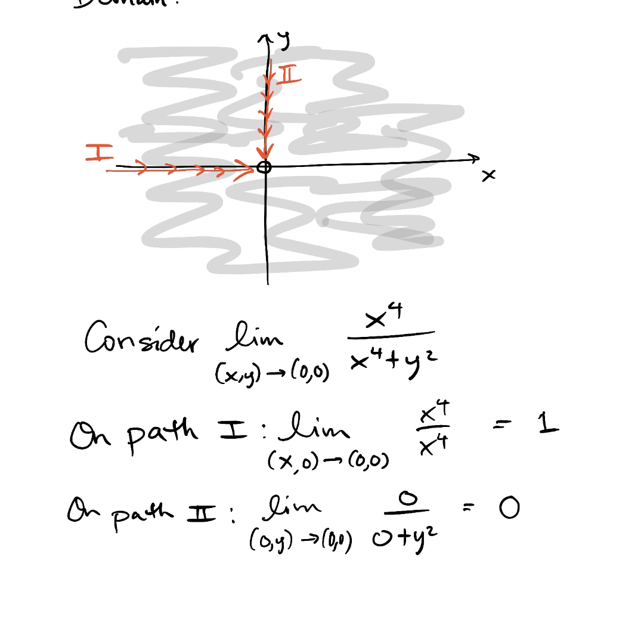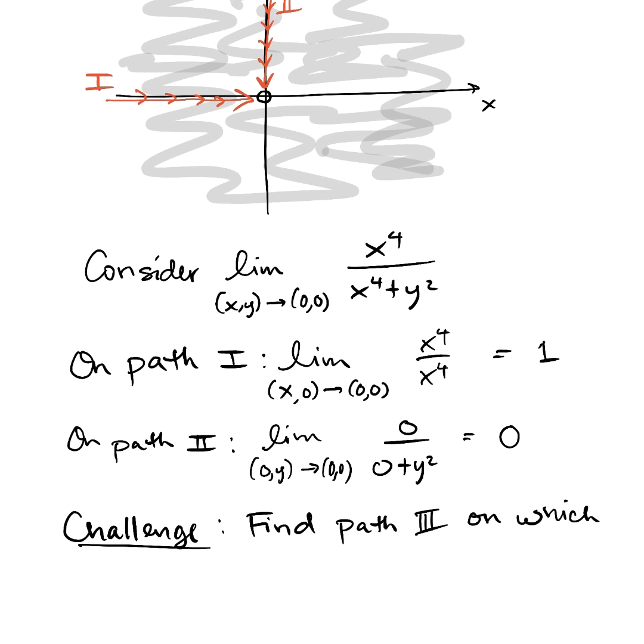All right, I have a challenge for you to end this intro to 14.2. Here's a challenge in this example. Find a path three on which the function approaches a half. So yet a third path that disagrees with both the first two. In any case, this function definitely does not have a limit as x comma y approaches zero zero because it seems like the behavior of the function depends on the path you take.